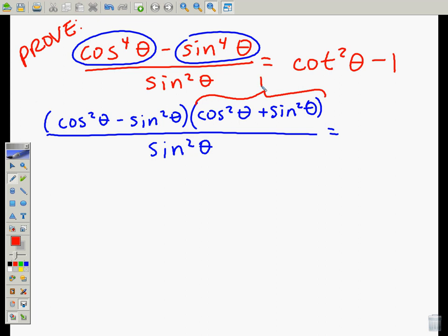And so when we bring it down to our next line, we can say we still have cosine squared theta minus sine squared theta, except our next term is now just one.